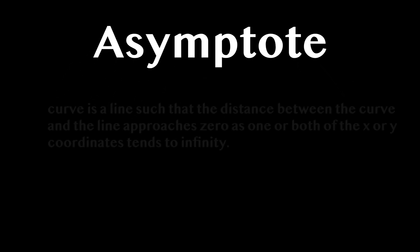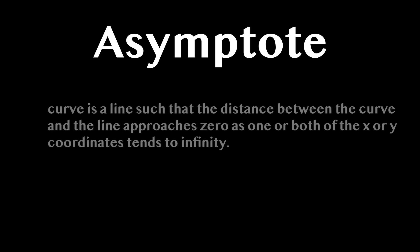The asymptote of a curve is formally defined as a line such that the distance between the curve and that line approaches zero as one or both of the x or y coordinates tend to infinity.